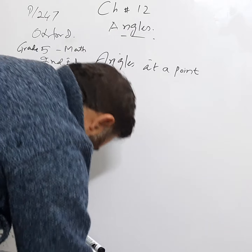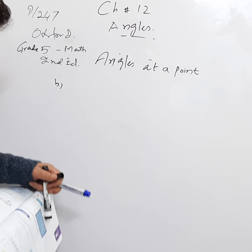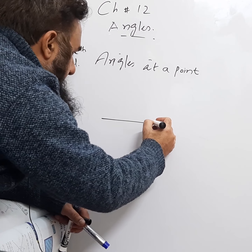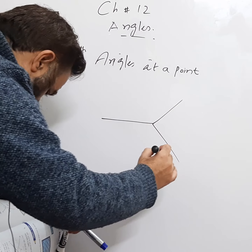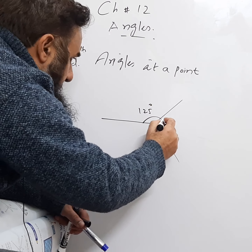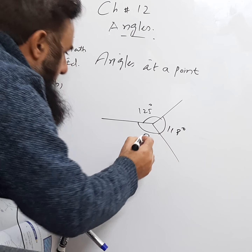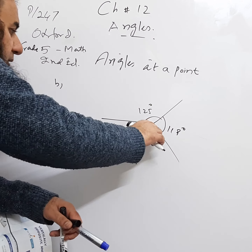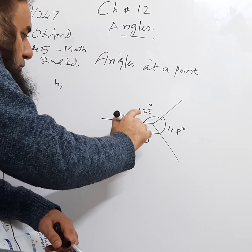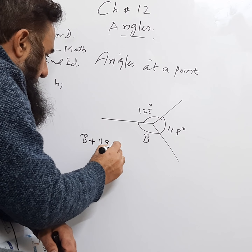We now move to part b. The diagram shows a straight line with angles at a point: one angle is 125°, another is 119°, and the unknown is b. This is also angles at a point, so the sum of all angles equals 360°.